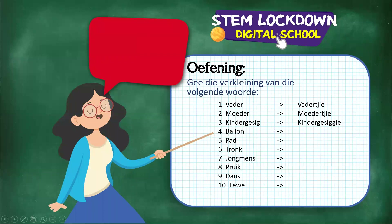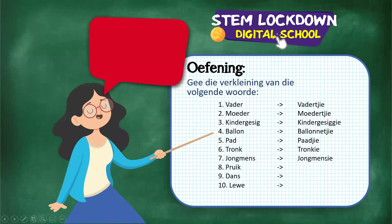'Moeder' would be 'moedertjie' — it gets a 'tjie'. 'Gesig' — it ends with a vowel and a 'g', so the 'g' doubles and gets an 'ie' — 'gesiggie'. 'Ballon' — it's an 'o' ending with an 'n', so the 'n' doubles — 'ballonetjie'. 'Pat' is one of those exceptions — 'patjie'. 'Tronk' — it has an 'nk' at the back and just gets an 'e' — 'tronkie'. 'Jongmens' becomes 'jongmensetjie'. 'Pruik' becomes 'pruikkie'. 'Dans' becomes 'dansetjie'. 'Lewe' becomes 'lewetjie'. Take a snappy — it's a great exercise to do before an exam or test.